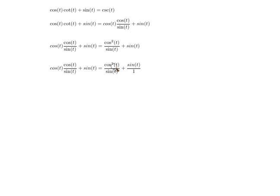We've got that cosine squared of t over the sine of t plus this is just sine over t.